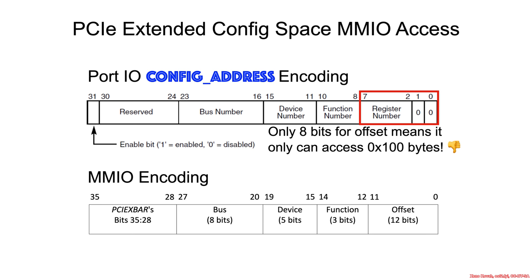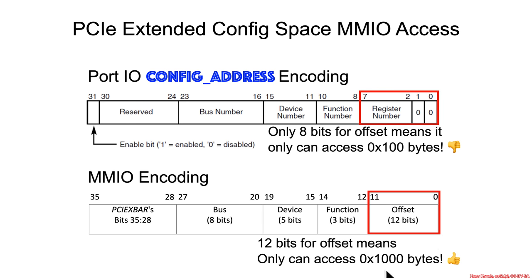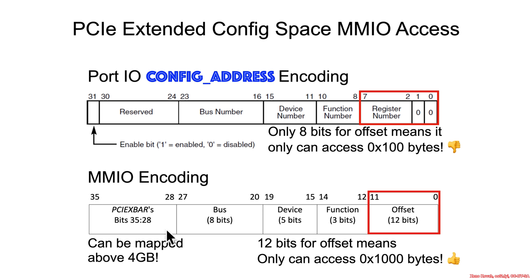On the other hand, the encoding for accessing via memory-mapped IO has the least significant 12 bits usable, meaning you can access hex 1000 bytes — four kilobytes — at a time, which is the full offset within the extended address space. We can also see that it allows for mapping above four gigabytes: bits 35 to 28 can be used for the upper address bits, and all the lower 28 bits are assumed to be zero.